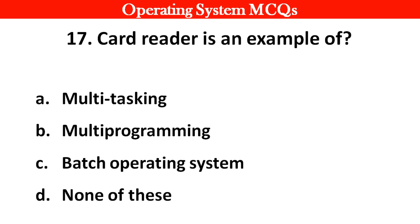Next question: Card readers is an example of: Options: A. Multitasking. B. Multiprogramming. C. Batch operating systems. D. None of these. Right answer is option C: Batch operating system.